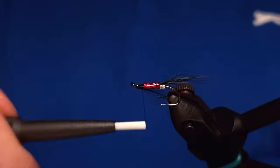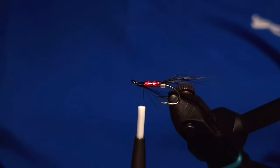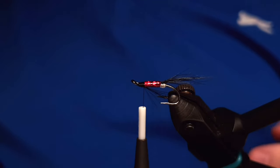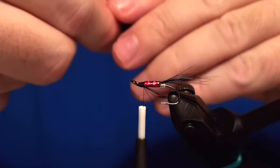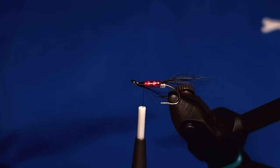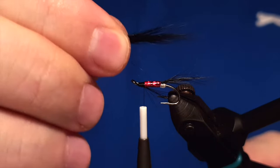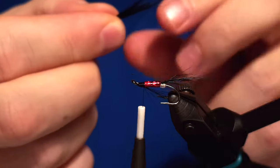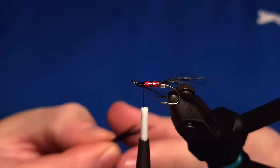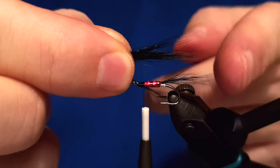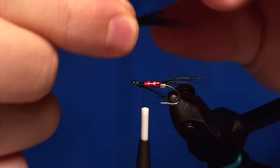And keep on preparing the head of the fly for the wing. The wing is made out of black squirrel. Black squirrel is a popular material for lots of salmon flies.